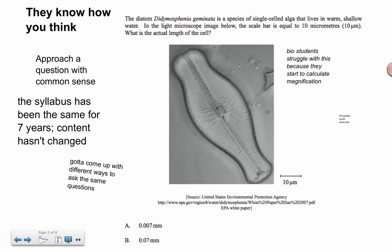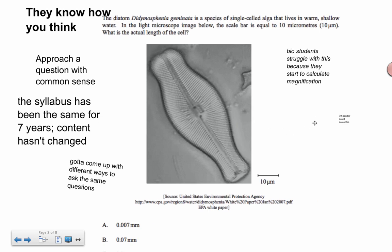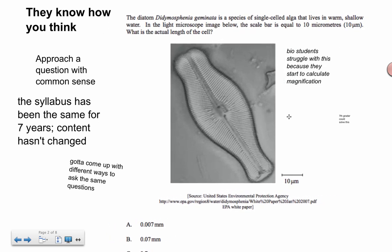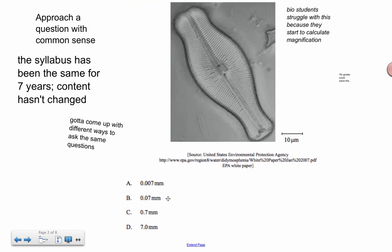But many students will try to approach this by writing down the equation for magnification, when actually a seventh grader can solve this question without knowing anything about how to calculate magnification. Because in the end, all this is asking you is how long is this actual cell? They tell you here's a little scale here, so you literally have to just use your finger, pinch it to this size and see how many times it fits. Turns out this bar fits about seven times, and then you can calculate that to be 70 micrometers. Then all you got to do is convert micrometers to millimeters and then you're done.